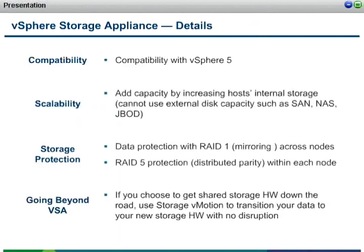Getting into further detail about what the storage appliance is able to do: from a compatibility perspective, you will need vSphere 5 in order to utilize the Storage Appliance 1.0. We've set that as our baseline with version 5. In terms of scalability, if you need to add capacity to your storage appliance, the way you'll do that is by increasing the number of disks inside or changing the disks inside the server itself. Remember, we're not using any external capacity — NAS, SAN, JBOD, or anything else. This has got to be a disk that's internal to the host itself.